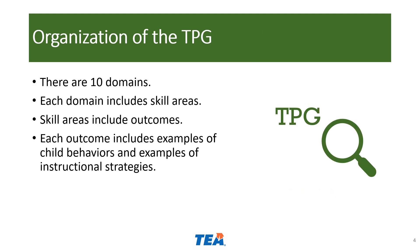The Texas Pre-K Guidelines are organized by domains. There are 10 domains. Each domain is then divided by skill areas, which include the outcomes for each of those skill areas. Examples of child behaviors and examples of instructional strategies are included for each of the outcomes.